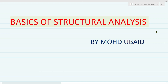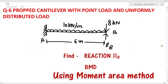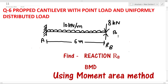Welcome to my YouTube channel. My name is Muhammad Ubad and this is another video in the basics of structural analysis series. Today we are going to solve a very interesting problem: a prop cantilever subjected to a UDL of 10 kN per meter on the entire span and a point load of 8 kN acting at B. We are going to find the reaction Rb and draw the BMD.